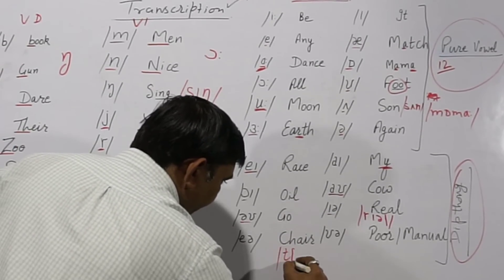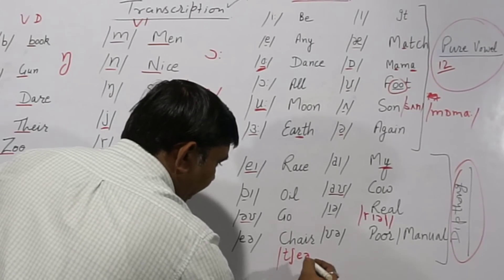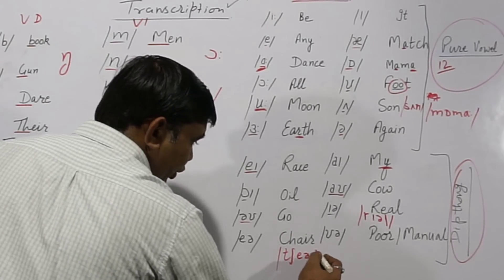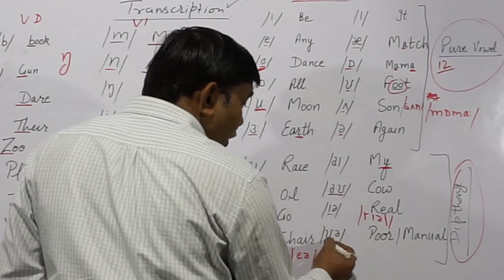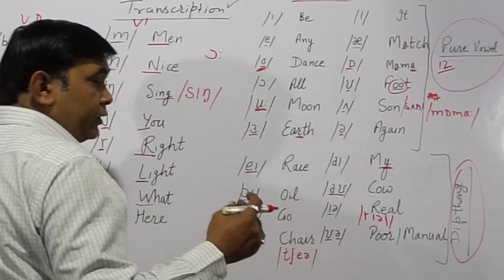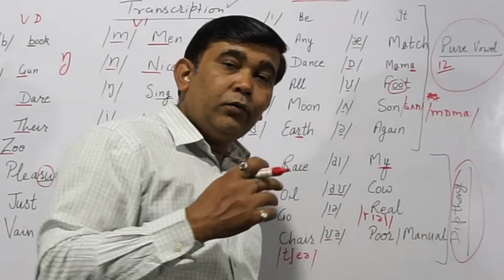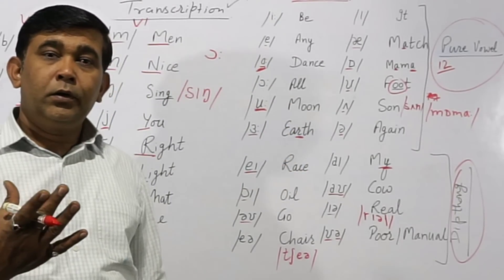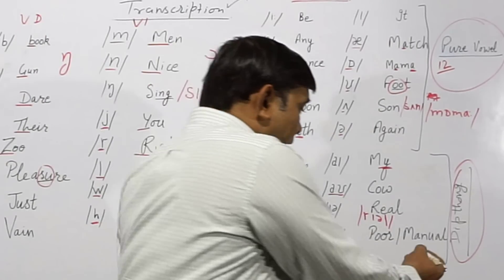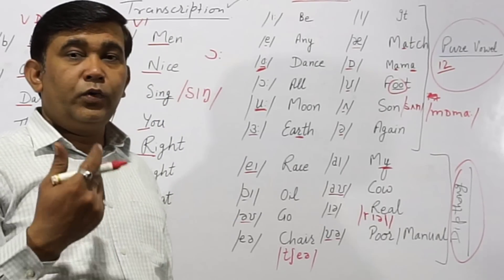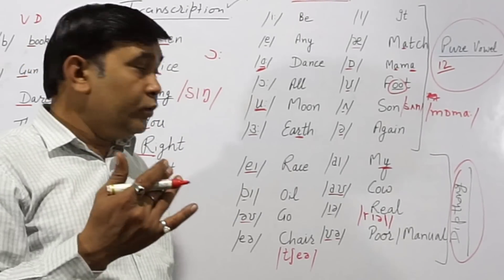So 'chair' is transcribed as /tʃeə/. The last diphthong is /ʊə/ — as in 'manual', 'manual'. We usually say it without the r sound — /ʊə/.